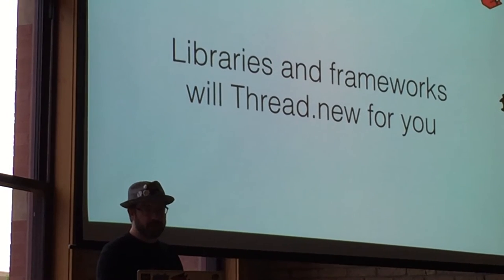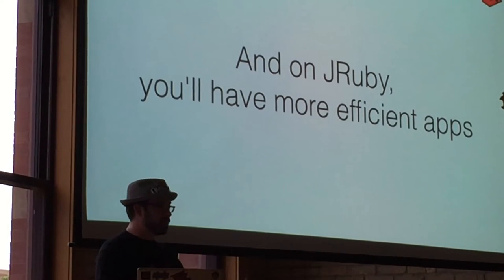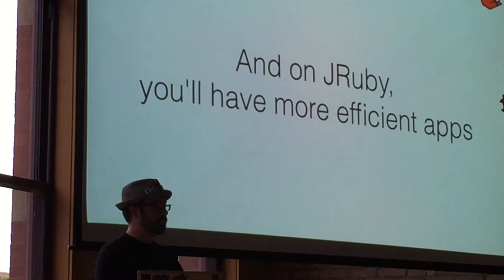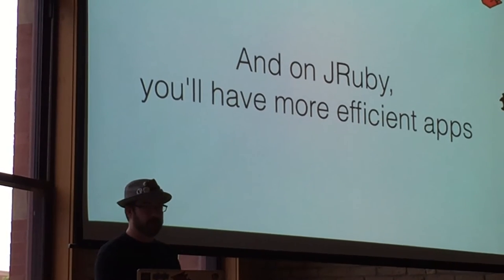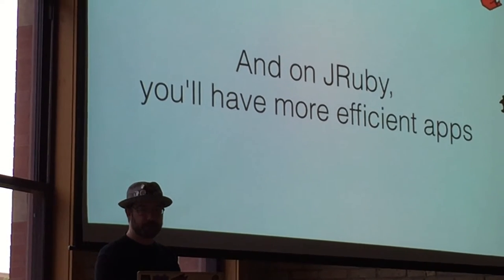The libraries and frameworks like Concurrent Ruby will usually do this work for you. Write your application in at least a reasonable way, keep your stuff local to that request, and you're probably not going to have too much trouble. And then of course on JRuby, just by using Rails, using Puma, using some of these libraries, you'll automatically get some parallelism.